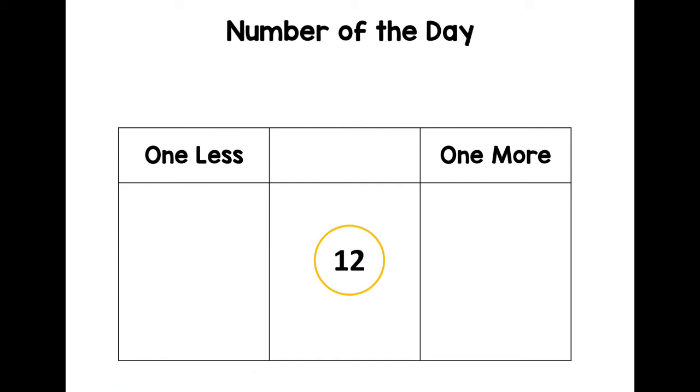What's one less? When you're counting to 12, what number do you say just before? Or if you have 12 cakes and you eat one, how many have you got then? 11. That's right, well done. But maybe you've got 12 cakes and someone gives you another one. How many will you have then? You'll have 13. Well done.